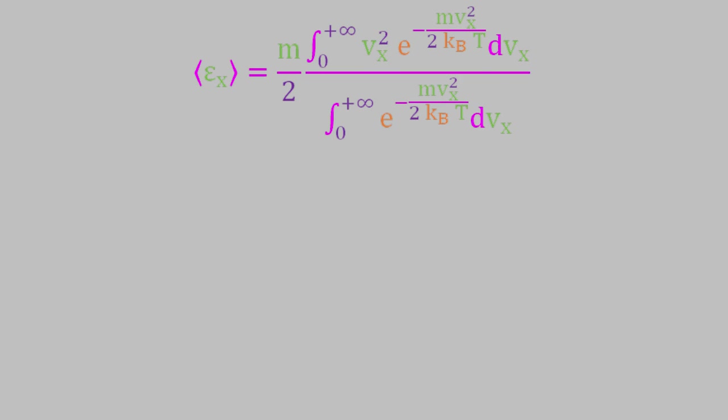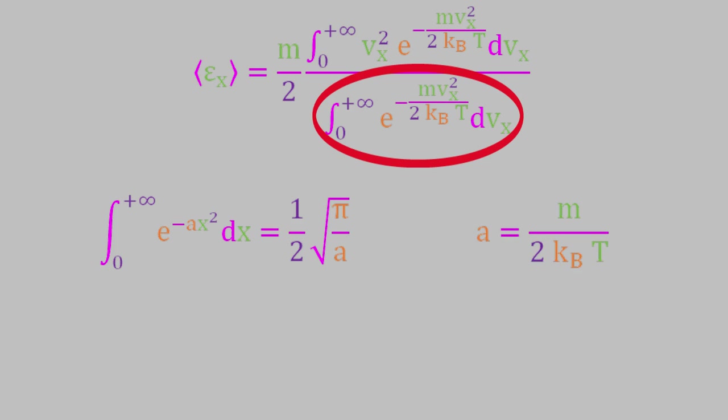Meanwhile, the integral in the denominator corresponds to this general equation. Once again, a is equivalent to m over kb times t and x corresponds to vx. That means the denominator can be written like this. One half times the square root of pi times 2 times kb times t over m.